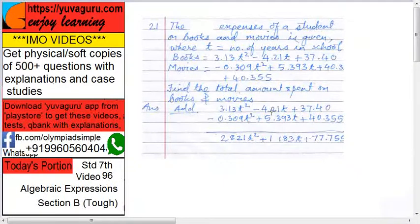Now you are adding, so no sign change. So 3.13 minus 0.309, you will get 2.82 and t². Similarly for others, you will get 1.183 over here, 77.755 over here. Solve this yourself, this is the required answer.